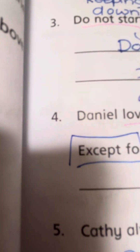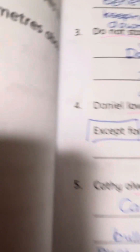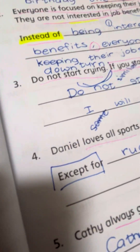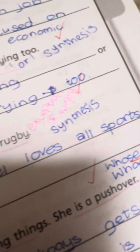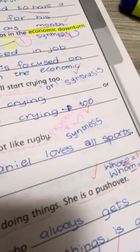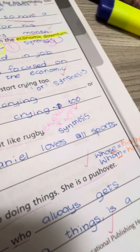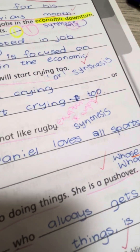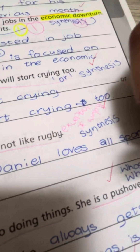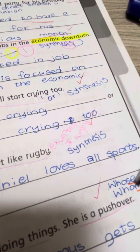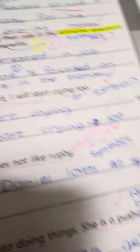Katie always gets bullied into doing things. She's a pushover. So: Katie, who always gets bullied into doing things, is a pushover. This also lets us know about who and whom. Who means his — his mother, his father. But whom is him — the winner is him. Who ends in O, whom ends in M. Who's has an S. You can remember it like that. That's all, thank you.